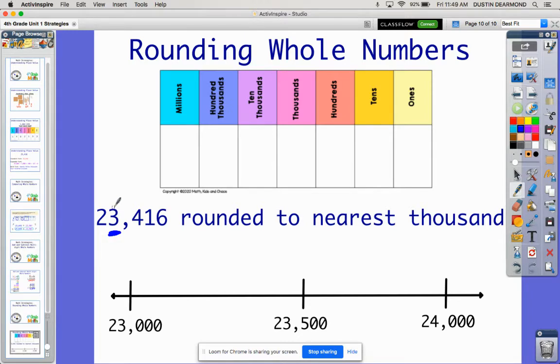And if you'll remember, we know where to go because we look to the number, the digit or the place value that's to the right. So we're going to look at the 400 to help us determine where we're going to go in the thousands place.